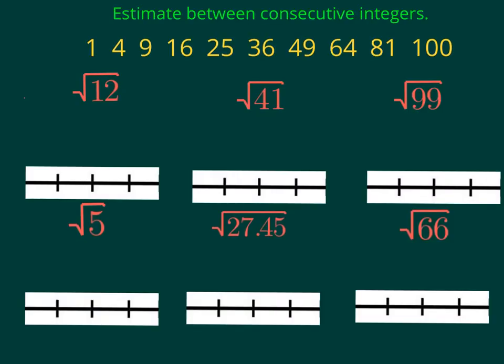Starting out, I have six different square roots. None of them are perfect squares. As you can see, I have my perfect squares listed up here, and none of my square roots are perfect squares. Without a calculator, I'm going to estimate the value of all of these square roots, estimating them in between consecutive integers. Under each square root, I have a mini number line so we can place them and get an idea of where they would fall.